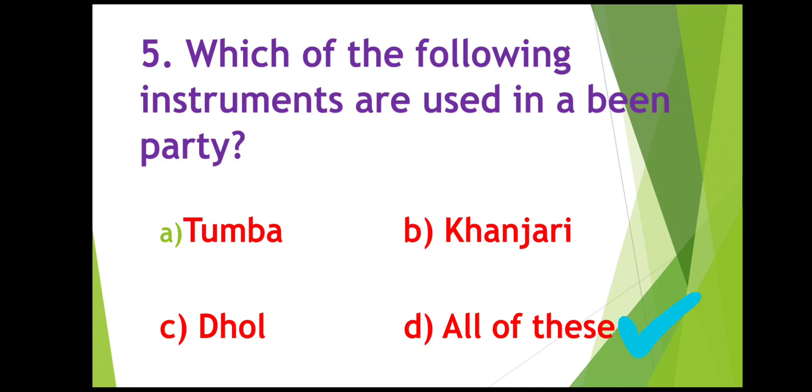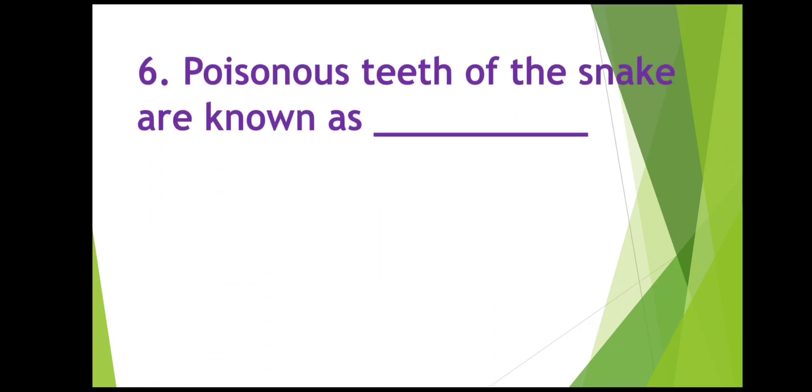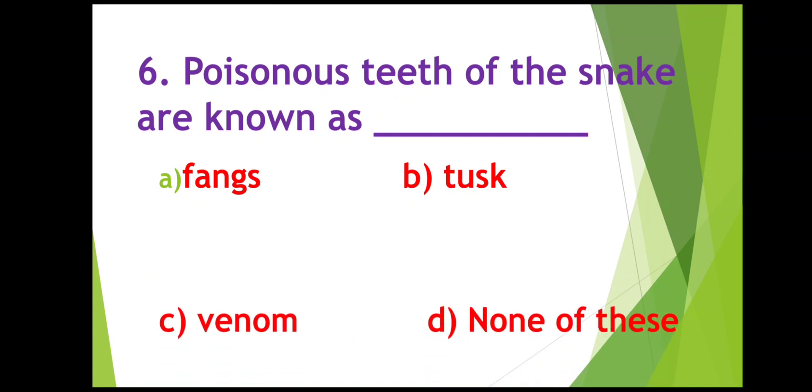Poisonous teeth of the snake are known as? Snakes have poisonous teeth which are known as fangs, tusk, venom, or none of these. Right answer is fangs. Snakes have two poisonous teeth that are known as fangs, two hollow teeth through which poison from the poison gland enters the person's body.